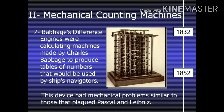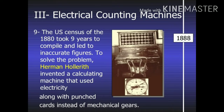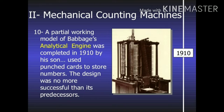The second generation spans from 1947 to 1962. This generation of computers used transistors instead of vacuum tubes, which are more reliable. In 1951, the first computer for commercial use was introduced to the public: the Universal Automatic Computer, UNIVAC 1.